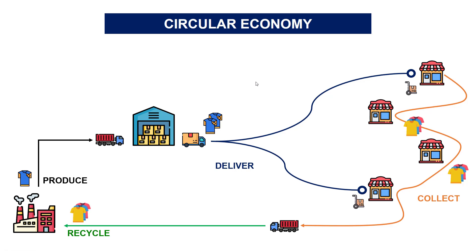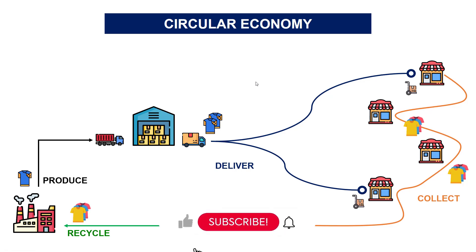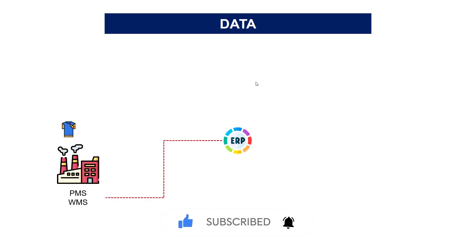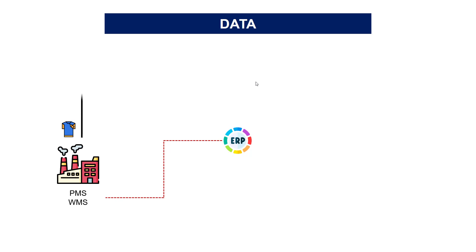How can we use data to optimize this process? Let's imagine that your company is using an ERP connected to different systems. The systems inside the factories — the production management system — is managing the production process, and you can also have a warehouse management system to manage the stock inside the factories. The transportation to the central warehouses can be tracked with the TMS, and we can have visibility of the inbound, outbound and stock from the warehouse management systems.